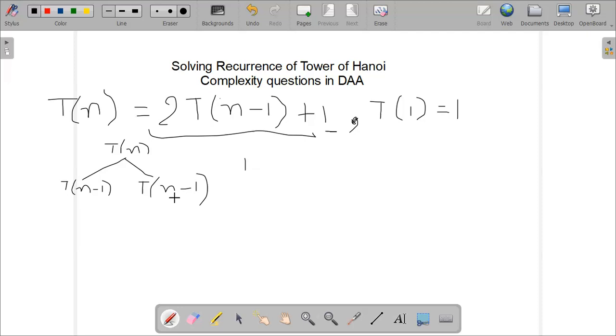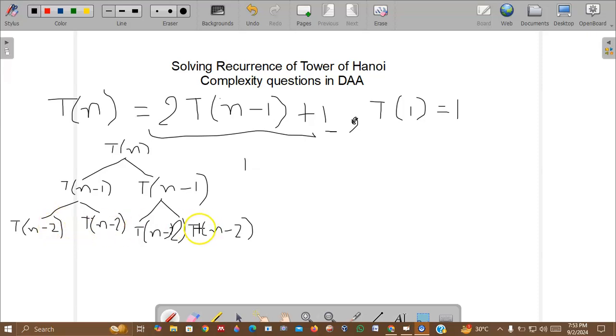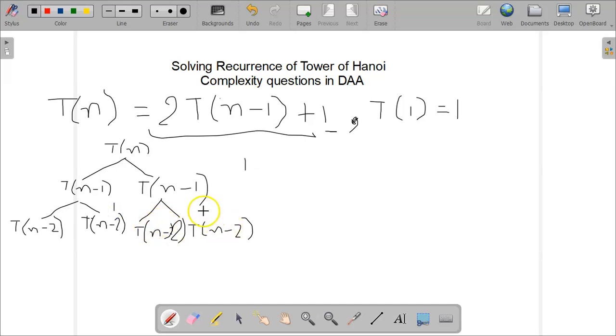Now these 2 branches will further have 4 branches as we can see here. For these 2 there is an effort of 1, and for these 2 there is an effort of 1. So total effort at this level is 2: 1 plus 1 equals 2.